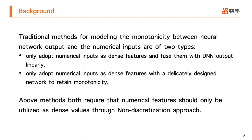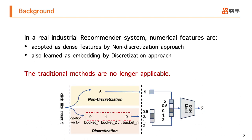Traditional methods for modeling the monotonicity between neural network output and numerical inputs are of two types. Both methods require that numerical features should only be utilized as dense values through a non-discretization approach. However, in real industrial recommendation systems, numerical features are also learned by embedding via a discretization approach, in which traditional methods are no longer applicable.